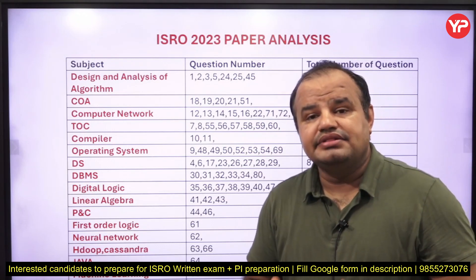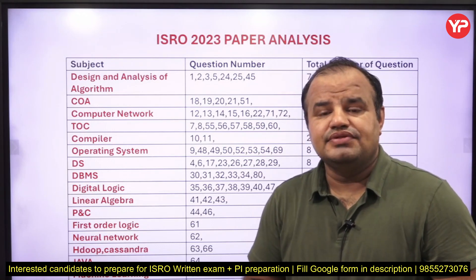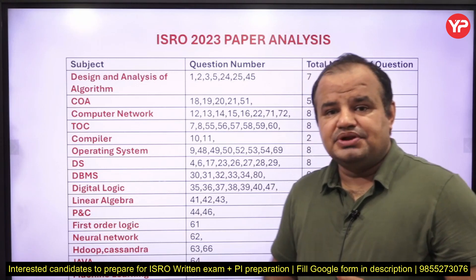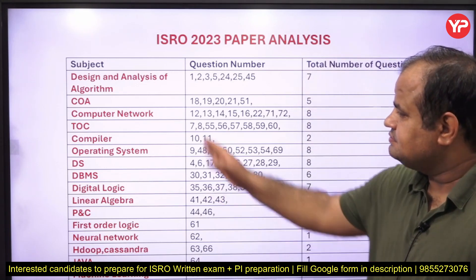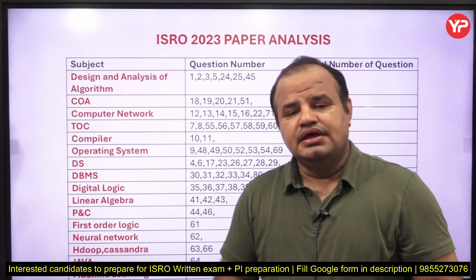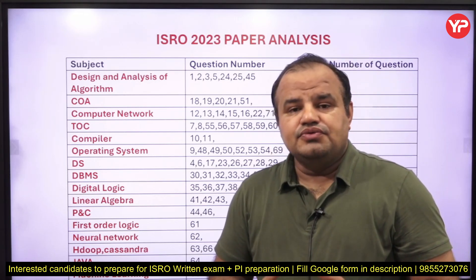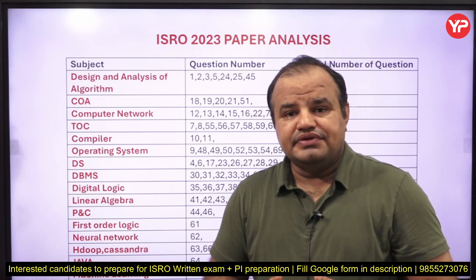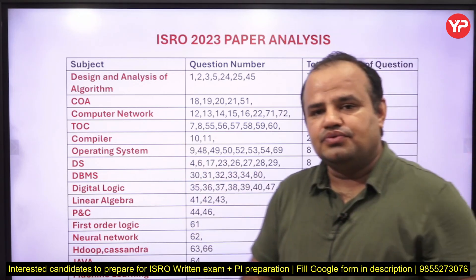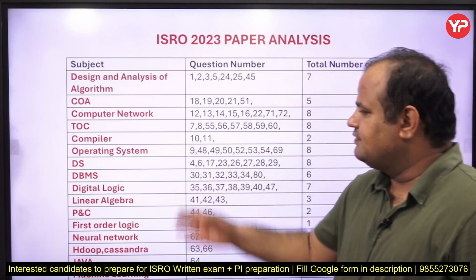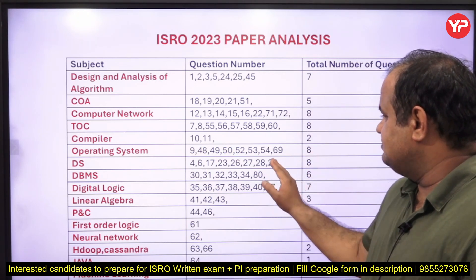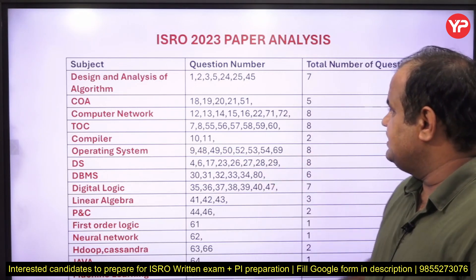Computer network questions may be numerical or theoretical — differences and services provided by particular components. TOC again has eight questions, straightforward questions — two or three from the closure property chart and decidability chart. Compiler asks only two questions, very easy and simple. Operating system also has eight questions.